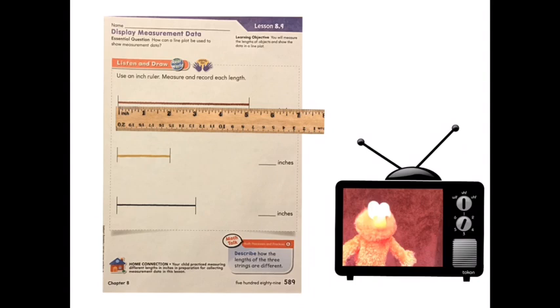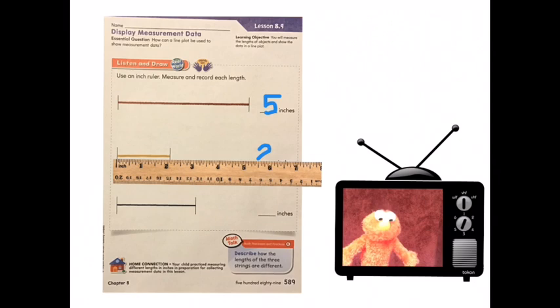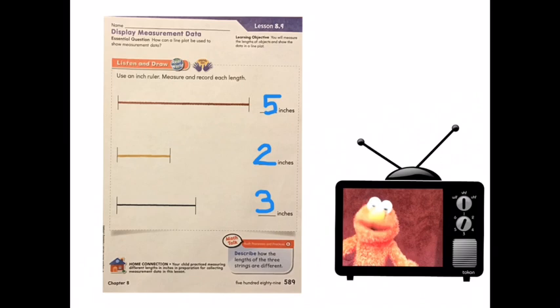Anyway, line up your ruler. Did you measure five inches? Elmo did. Now let's do the second one. Line up carefully. Did you get two inches? Elmo did. Now let's do the third one. Did you get three inches? Hey, Elmo is three. Three years old, that is. Not three inches.